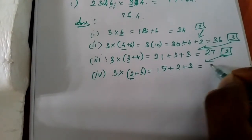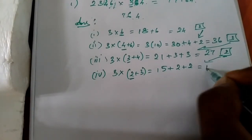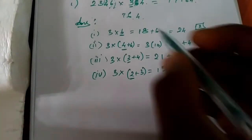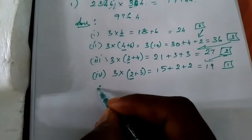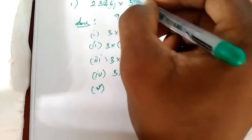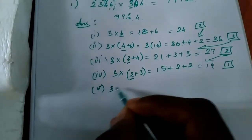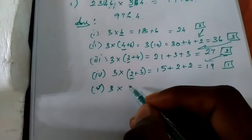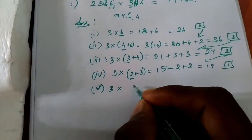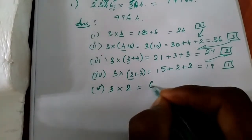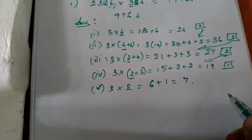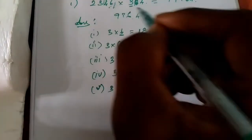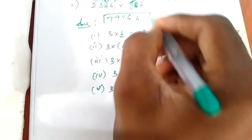5 plus 4 is equal to 19, memory 1, here 9. Next, final step — carefully: 3 into 2, okay, 3 into 2 equal to 6. 6 plus 1 memory equal to 7. Okay, answer.